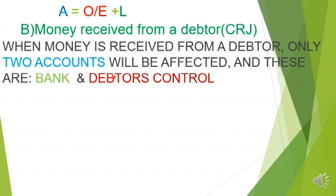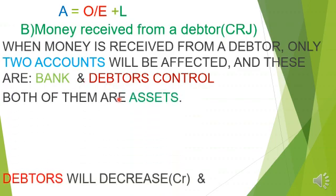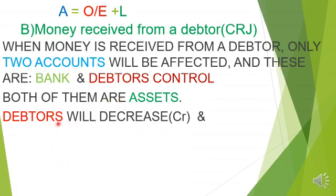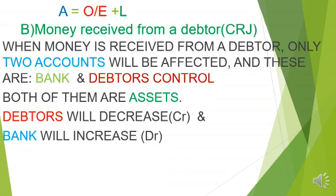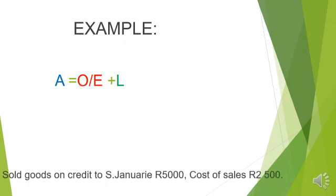We receive money from a debtor, so Bank and Debtors' Control are the two accounts affected — both are assets. Debtors' Control decreases because what we are owed goes down, and Bank increases because money received is deposited into the bank.